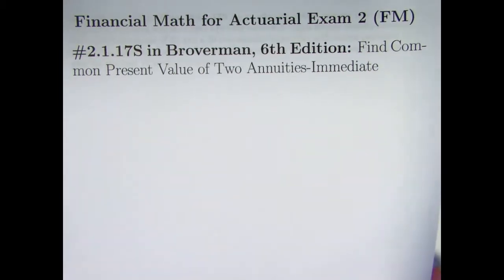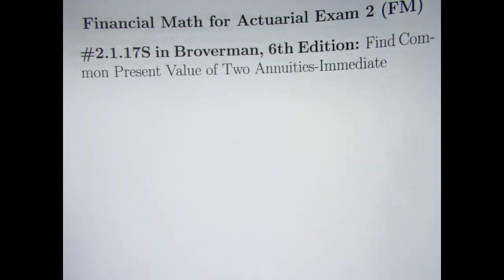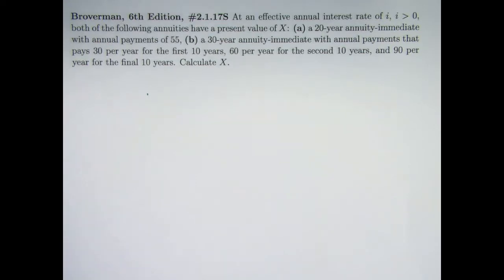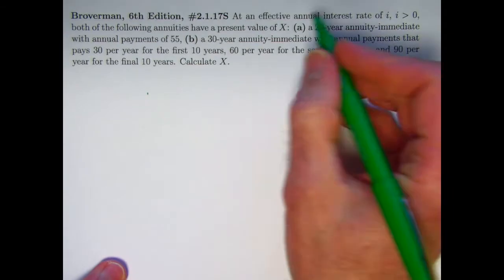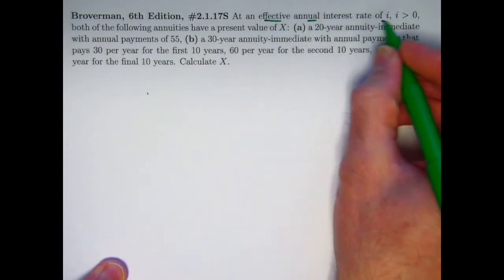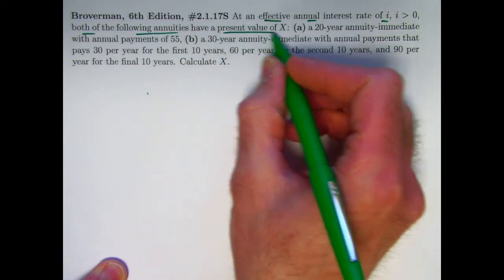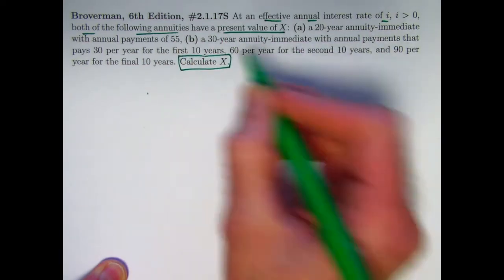You also might recall in the last video we briefly talked about annuities due. That will come up in later videos. So here is the problem. It is a fairly tricky problem, so you're going to want to pay attention. And I also want to derive a couple formulas, one that we've used already for the future value and a new one for the present value. You've got an effective annual interest rate of i, and both of the following annuities have a present value of X, and the goal is going to be to calculate X.